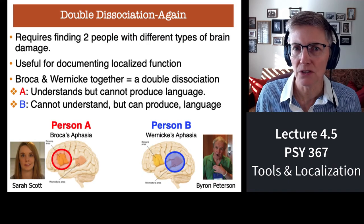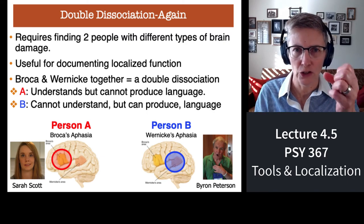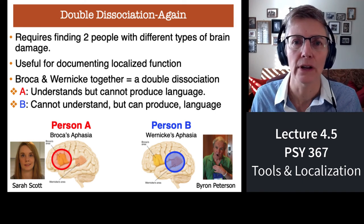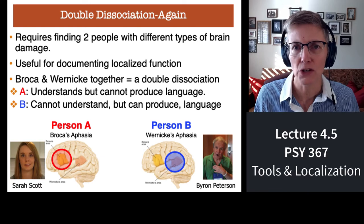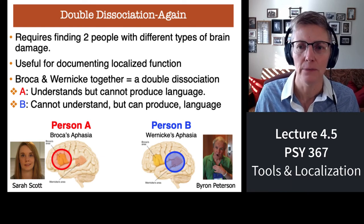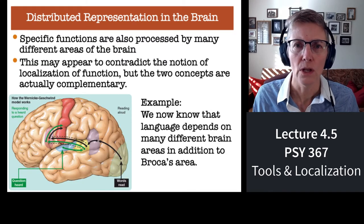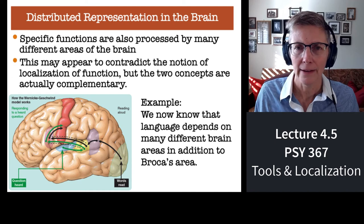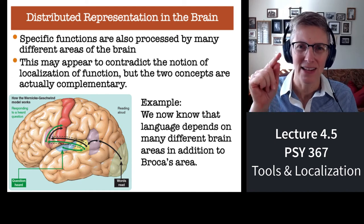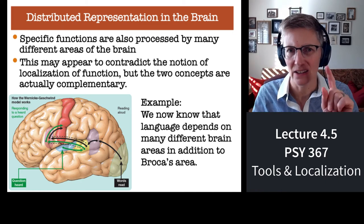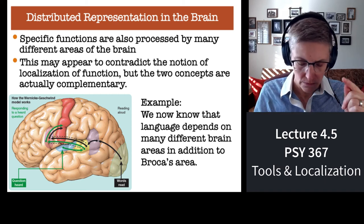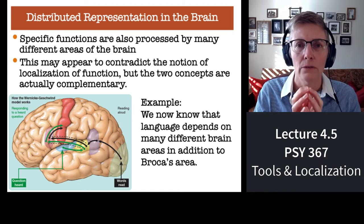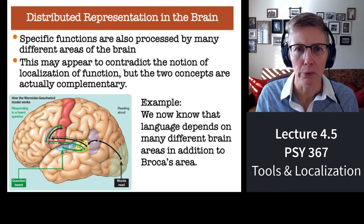You'll remember we talked about double dissociation: can you find a patient who can do A but not B and another who can do B but not A? We've seen that with language through Broca's and Wernicke's aphasia, and we've watched videos of both Sarah Scott and Byron Peterson communicating. So we're confident Broca's area and Wernicke's area are two different areas involved with two different processes. Can we go beyond that localization? Yes — cognitive processes occur as a result of interactions between multiple brain areas.